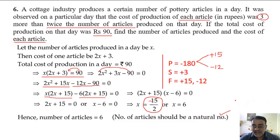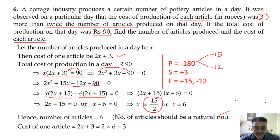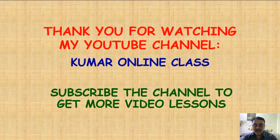The cost of each article is 2x plus 3, which is 2 into 6 plus 3, that is 12 plus 3, which equals Rs. 15. So that's all for today's session. Thank you very much.